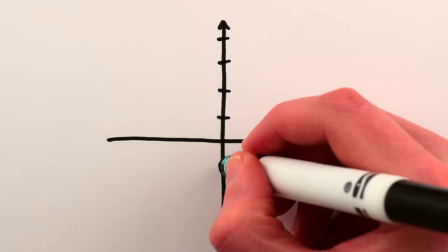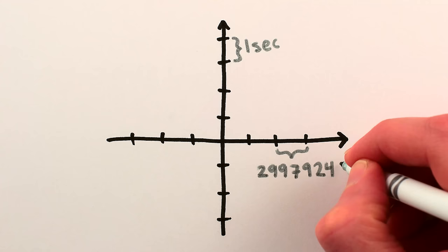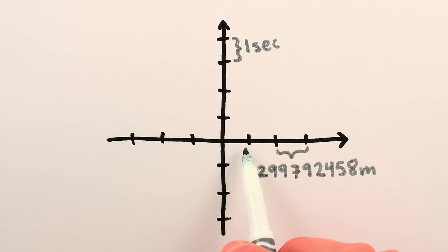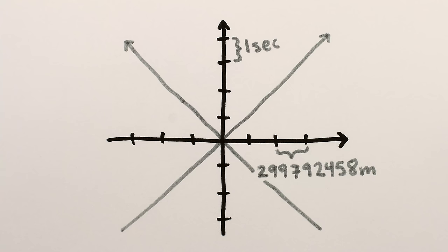Normally, physicists draw their spacetime diagrams such that if every vertical tick mark represents one second, a horizontal tick mark represents 299,792,458 meters, which means that the speed of light, which is 299,792,458 meters per second, is drawn as a 45-degree line, to the right for right-moving light and to the left for left-moving light.